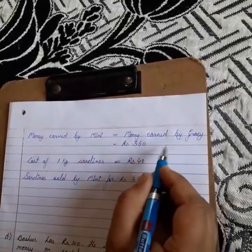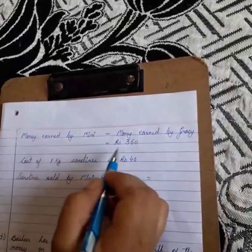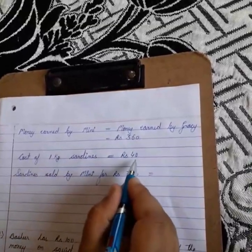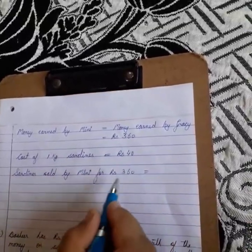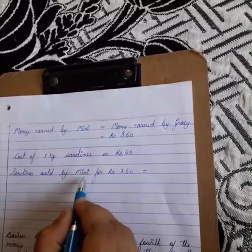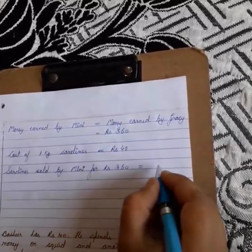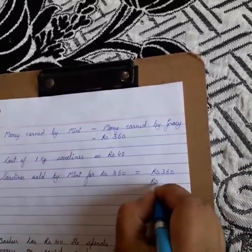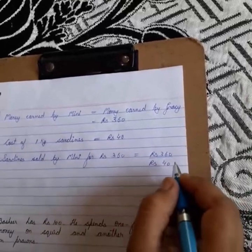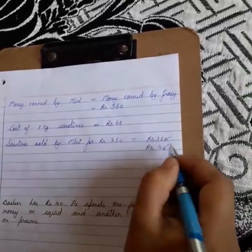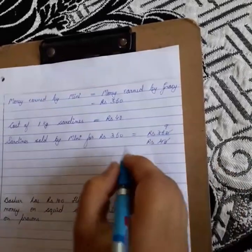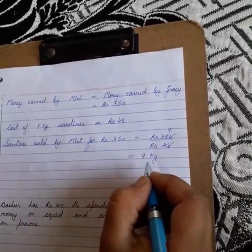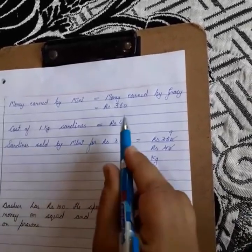So Mini has also earned ₹360. Now cost of 1 kg sardines is ₹40. To find how many kg of sardines Mini sold to earn ₹360, we divide: 360 divided by 40. Cancelling zeros, 36 divided by 4 gives 9. So Mini sold 9 kg sardines to earn ₹360.